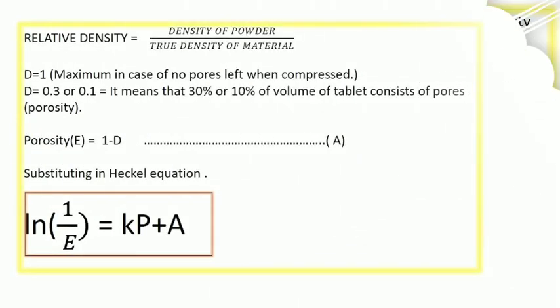So how are density and porosity interrelated? We will discuss here. D equals 1 in maximum, in case of no pore left when compressed. Here we are taking the D value 1 in case of no pores. If there are pores, D equals 0.3 or 0.1. So porosity equals 1 over 1 minus D.